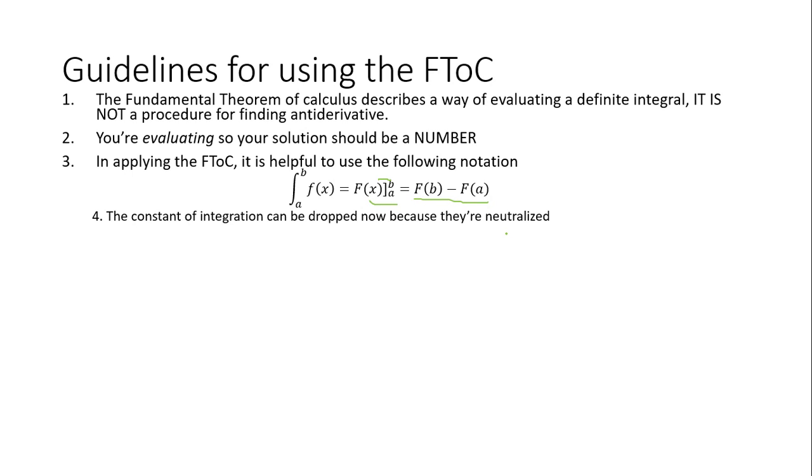And the fourth here is the constant of integration can be dropped because they're neutralized. You could think about this as we didn't know what the function was before or where it was because it was a continuum of functions. That's why we had that plus C. But now, since we know we're defined, we don't need to use it anymore. And I'm going to show you why. So let's say I had the integral of a to b of f(x) dx equals F(x) plus C from b to a. Now the next thing I would end up getting is F(b) plus C, and then I'll get F(a) plus C. And then when I do some distribution, I'm going to get F(b) minus F(a) plus C minus C. And now this is just going to turn into a big old zero.